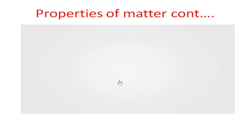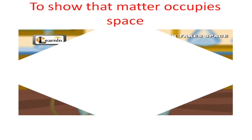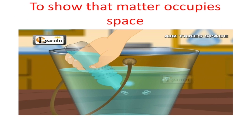Does matter occupy space? Yes, matter occupies space, and we can explain this from this demonstration. We insert a bottle filled with air into a bucket that has water. What's going to happen is that the water will move up into the container, displacing the particles of air, which move out. We can tell this is happening because we see bubbles escaping. These bubbles confirm that air occupies space. Air, being one form of gas, is a state of matter. This diagram shows that matter occupies space.